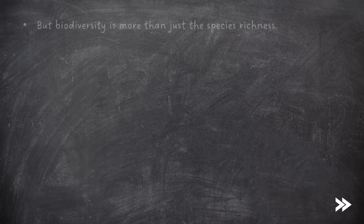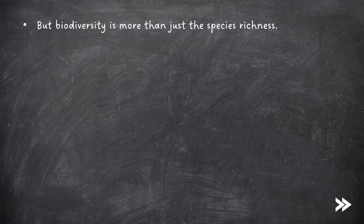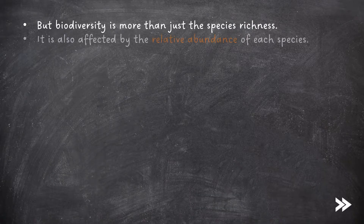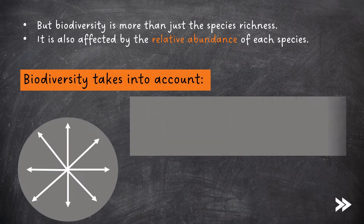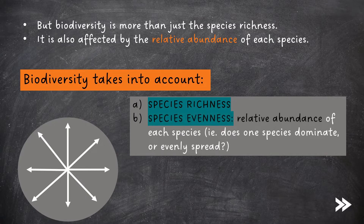However, biodiversity is more than just species richness. It's also affected by the relative abundance of each species. This is known as species evenness, i.e. does one species dominate, or do we have an even spread of different species?